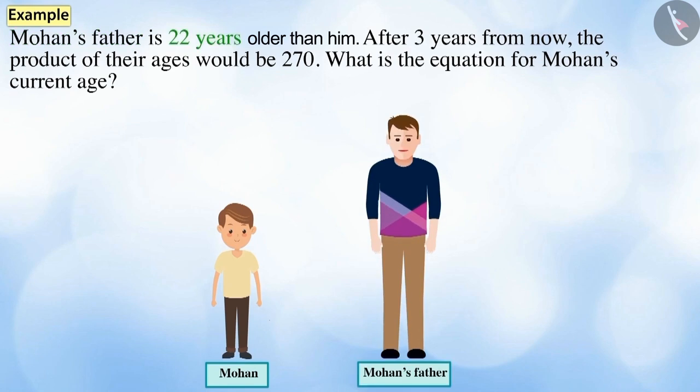Mohan's father is 22 years elder to him. After 3 years from now, the product of their ages would be 270. What would be the equation for Mohan's current age?